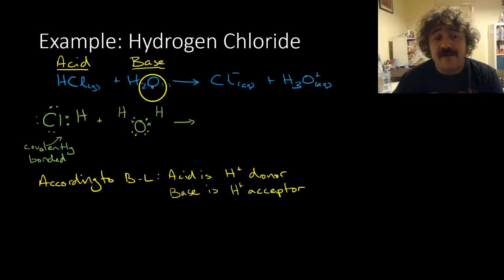This is our acid, this is our base, and it leaves a negative ion because it gives a proton to the water and forms a positive hydronium ion. That's why hydronium ions are super important. This is it as a Lewis dot structure.